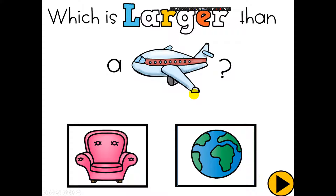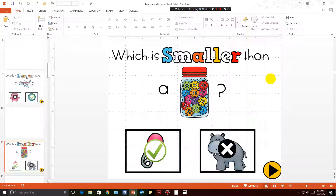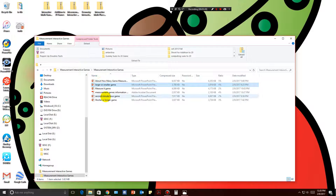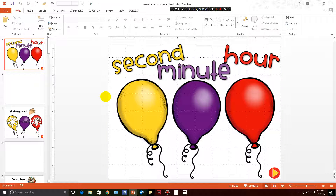Each game has roughly 20 slides — some have more, some slightly less. The last game in this particular pack is 'Second, Minute, Hour,' which covers the standard for measuring lengths of time that go by in our lives.